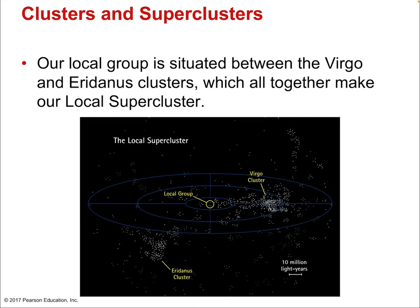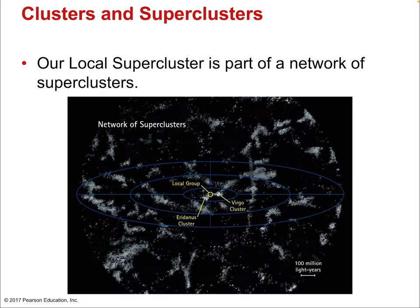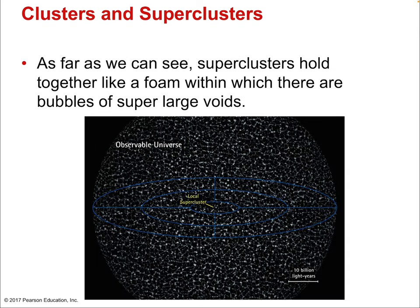Our local group is situated between the Virgo and Eridanus clusters, which together make up the local supercluster. Galaxies themselves are clustered together, and these superclusters form chains — almost like tendrils — stretching across the known universe. Zooming out even more, these paths continue over the known universe, requiring huge amounts of research and computational power to map.